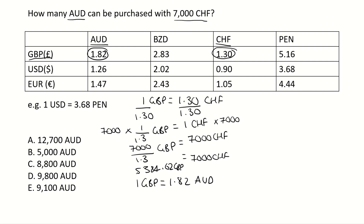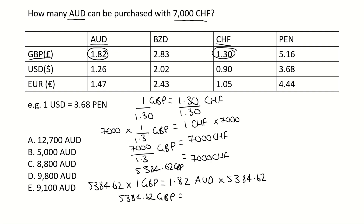We've got 5,384.62 GBP, so all we need to do is multiply both sides by 5,384.62. On the left side we have 5,384.62 GBP, and on the right side we type it into the calculator and end up with 9,800 AUD. So the answer for this question is D.